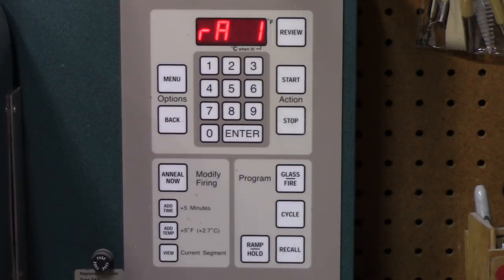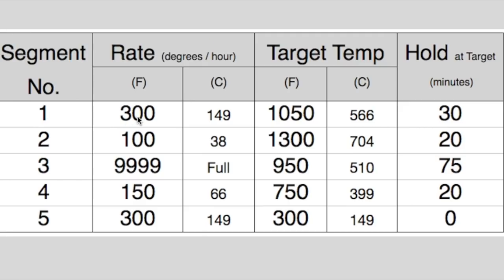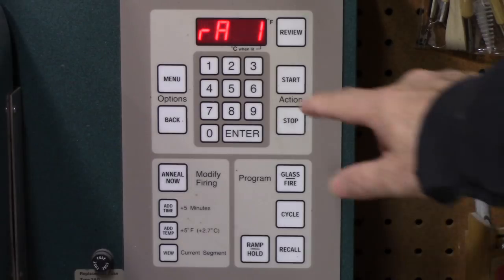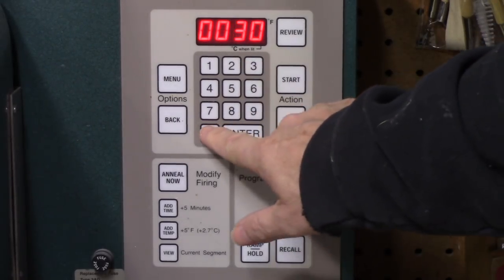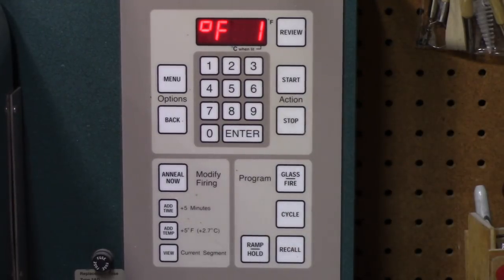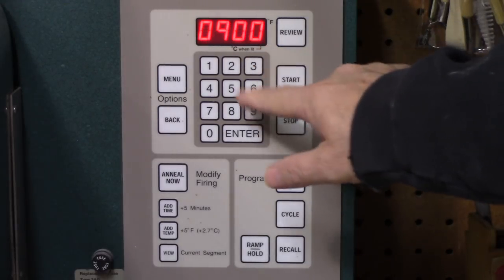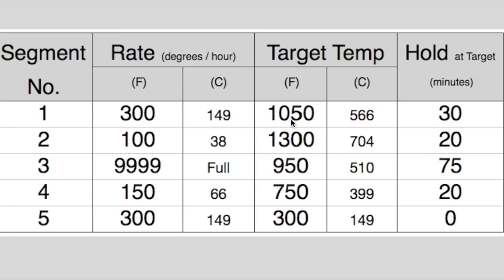Now the indicator says RA1. It's asking for the rate or ramp in segment 1. The rate in segment 1 is 300, right? Enter 300, press ENTER, and the readout changes to degrees F1. It's asking for the target temperature in segment 1, which appears to be 1050.